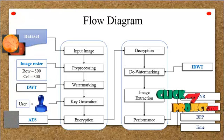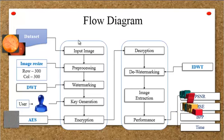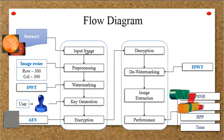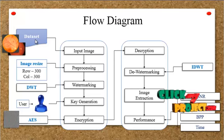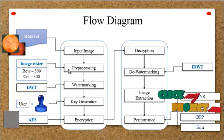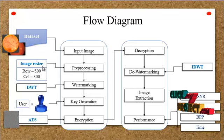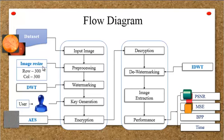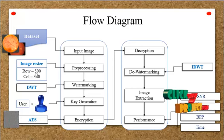We now discuss the overall flow diagram of the process. This is the overall working flow of the project. First, the input image is taken from the dataset, which consists of several images. After getting any one image from the dataset, pre-processing is carried out. In this pre-processing step, we perform image resizing — converting the image size to 300×300, meaning the number of rows and columns in the pixel are each 300.